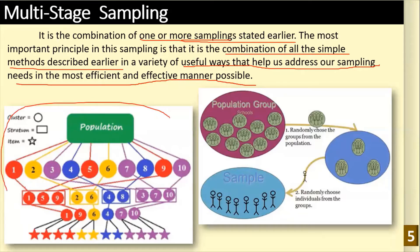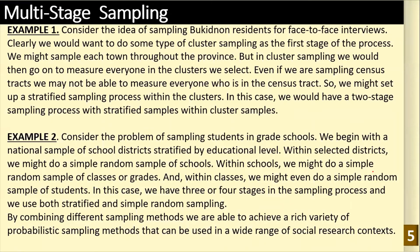For the first illustration, the combination used is cluster and stratified sampling, and then the last stage is simple random sampling. So the combination used here involves schools, which can be used in the cluster stage. Then randomly choose the groups from the population — cluster divide — then randomly choose individuals from the groups.